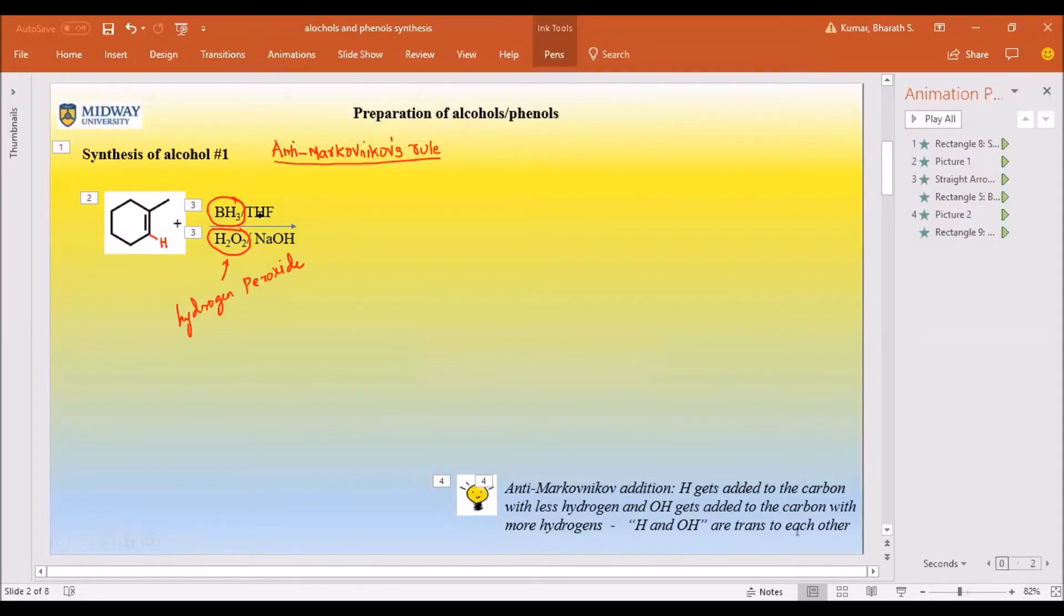You're adding your hydrogen to the carbon containing less hydrogens and the OH to the carbon containing more hydrogens. This is the carbon with less hydrogen, so I'm going to redraw this.